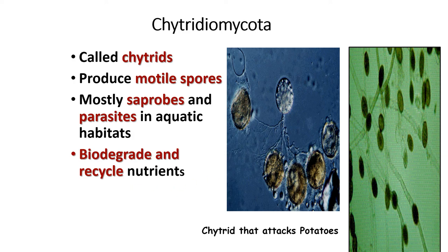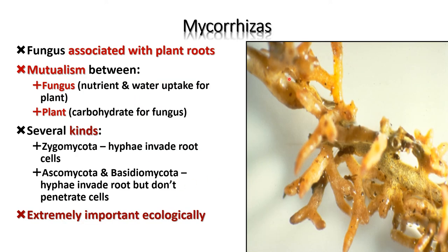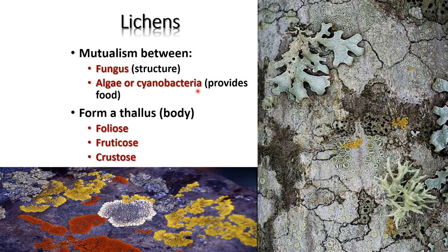Chytrids biodegrade and recycle nutrients. Mycorrhizae are fungi associated with plant roots in mutualism — the fungus provides nutrients and water uptake for the plant, while the plant provides carbohydrates for the fungus. In Zygomycota mycorrhizae, the hyphae invade the root cells. In Ascomycota and Basidiomycota mycorrhizae, the hyphae invade the root but do not penetrate the cells — these are extremely important ecologically.